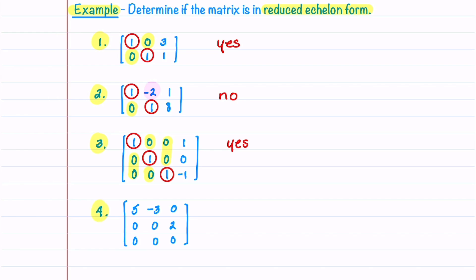Let's look at our last one. We do have a row of zeros at the bottom, so we're good with that. Let's now circle our leading entries — you might notice right away that our leading entries are not equal to one, so this matrix is not in reduced echelon form. Just for a complete list, let's highlight the zeros. Notice that in examples two and four, even though the matrices were not in reduced echelon form, you can see that they are in echelon form.